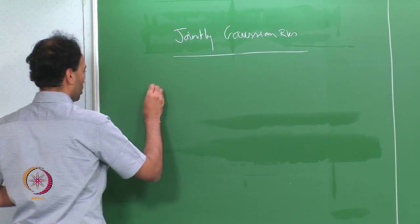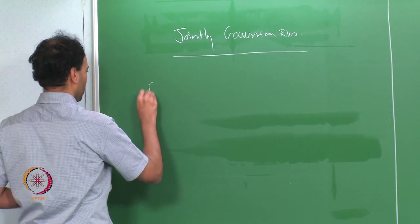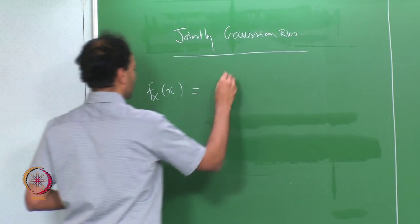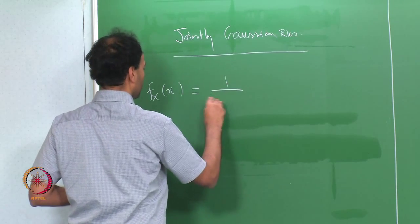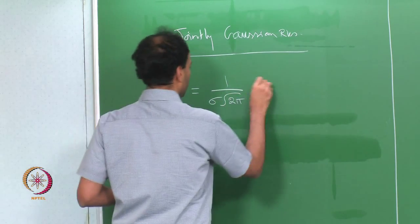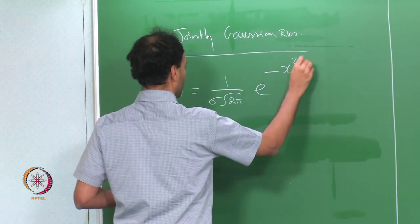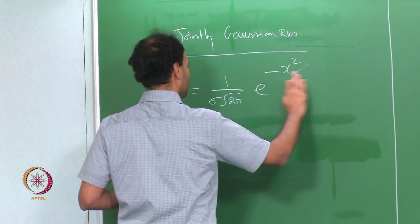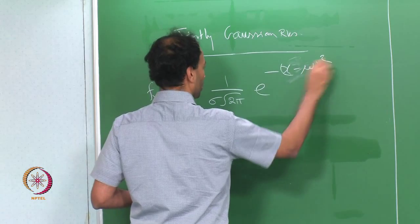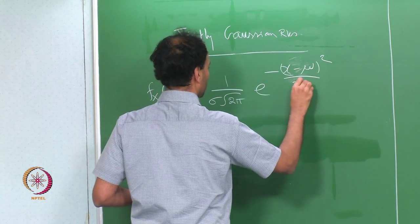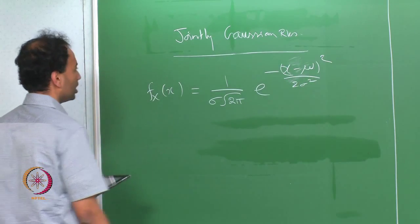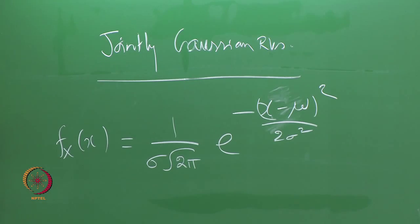You know the one-dimensional Gaussian. The PDF looks like 1 over sigma times square root of 2pi, times e to the power of minus (x minus mu) squared over 2 sigma squared. This is a Gaussian with mean mu and variance sigma squared.